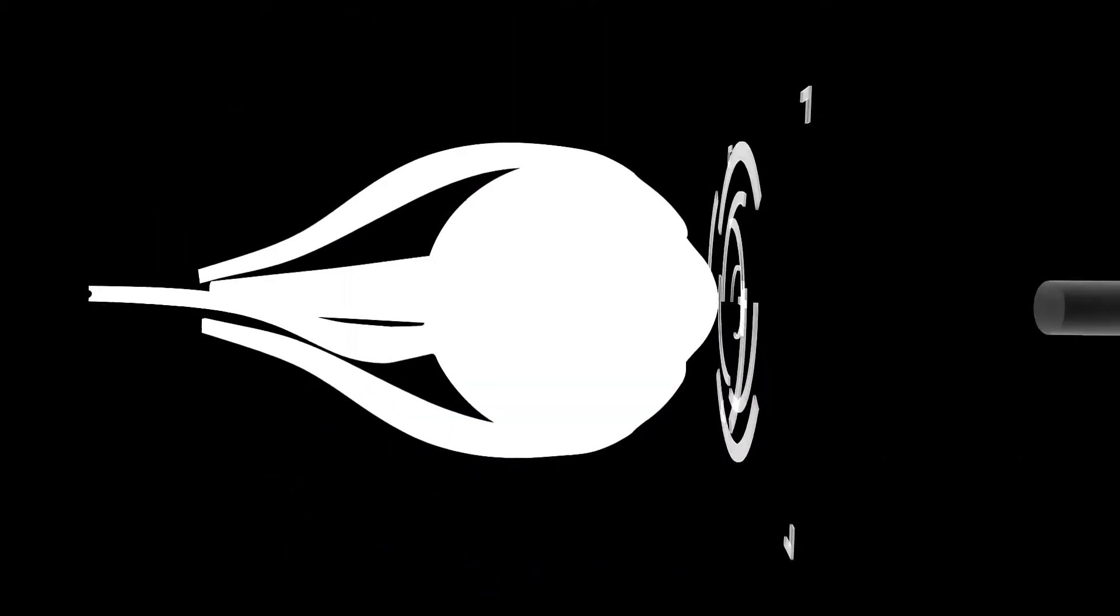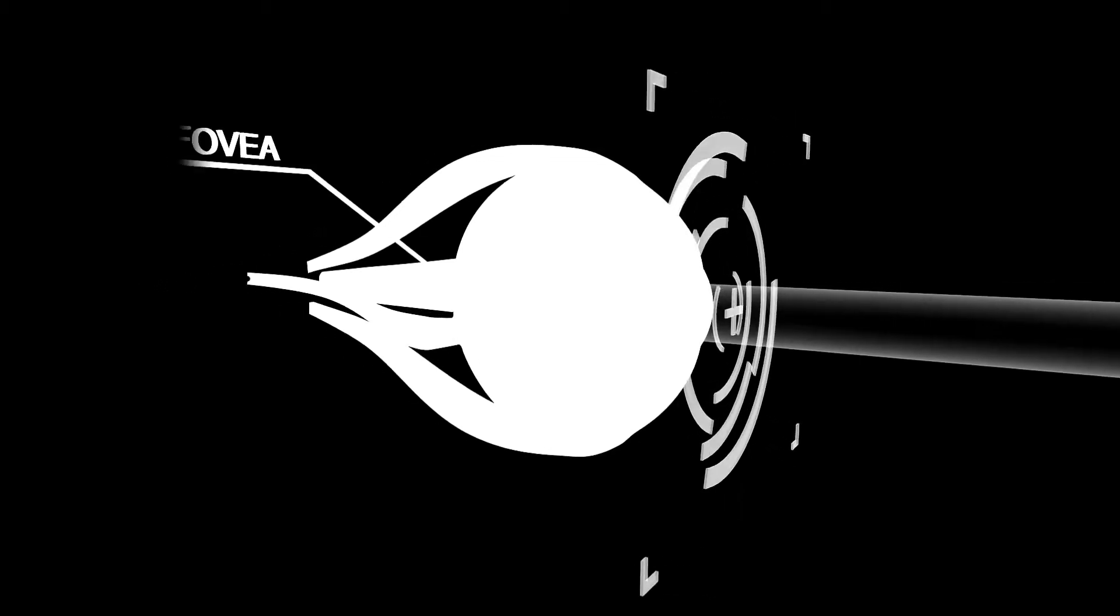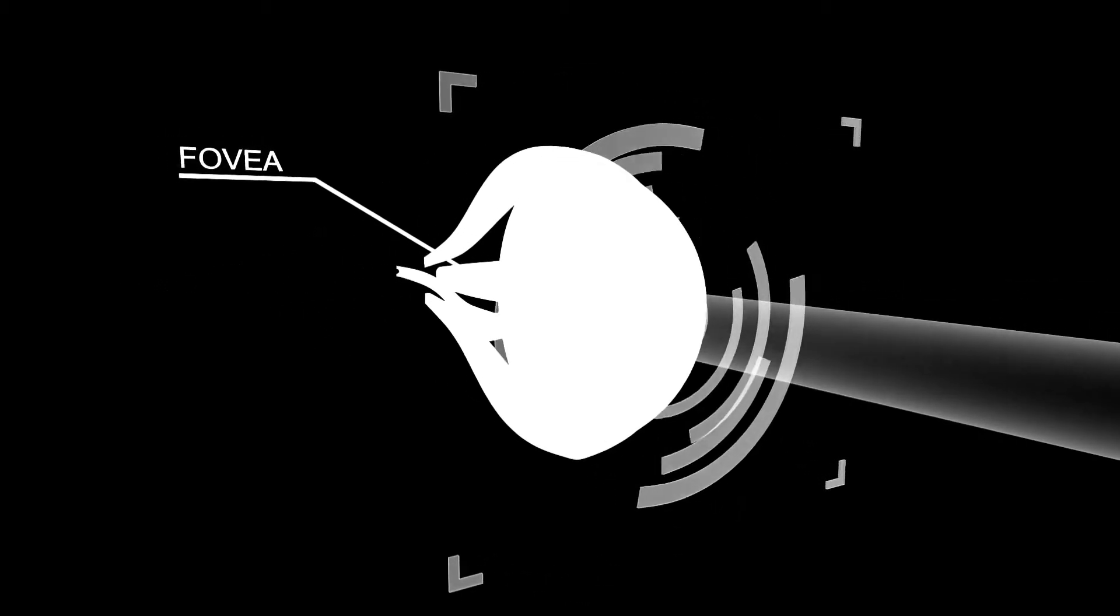An eye without photoreceptors couldn't detect light. The evolutionary process would need to simultaneously develop all these intricate parts and have them work together flawlessly for the eye to provide any survival advantage. The probability of this happening by chance is so astronomically low that it borders on the impossible.